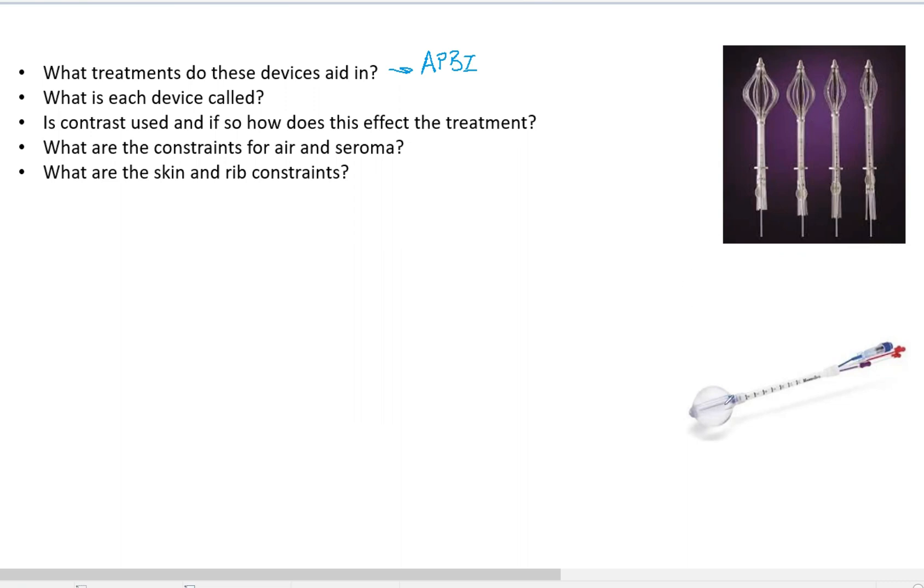Now what is each of these devices called? The bottom here is the Mammosite, it's a single catheter. It can also have multi-lumens now with four channels that can be in here. There's also the Contura which is a five channel vacuum port to remove air and seroma.